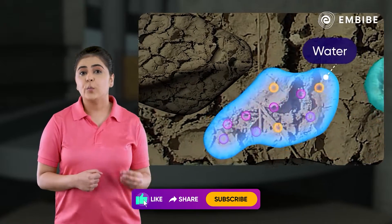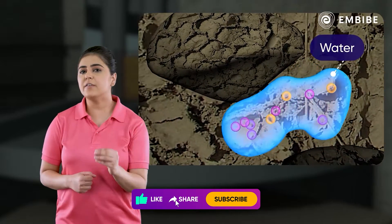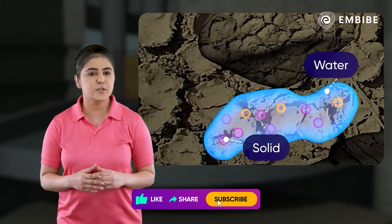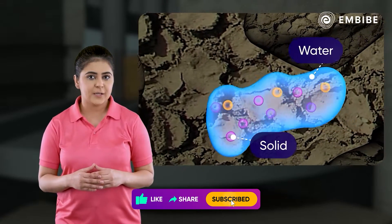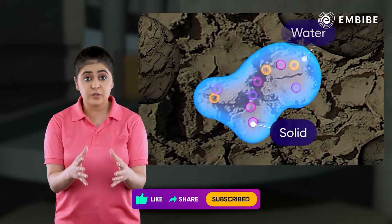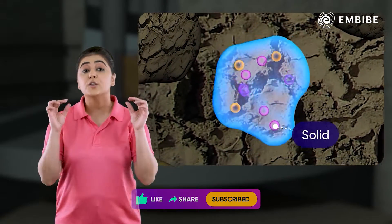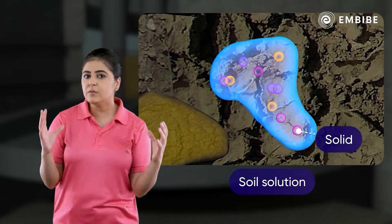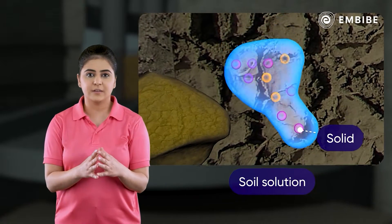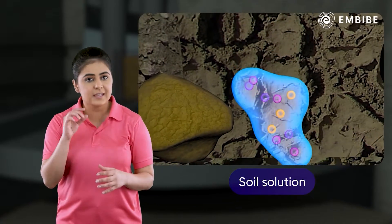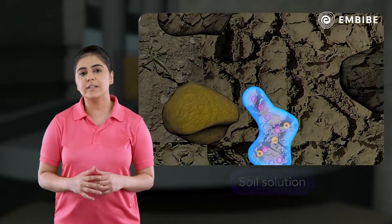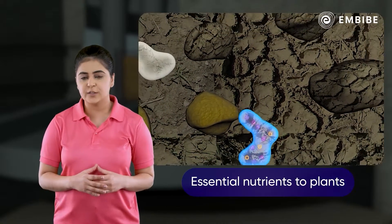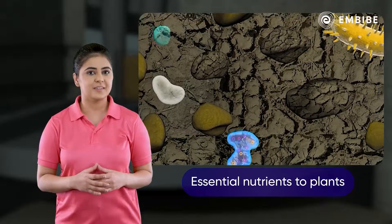The pores in the soil contain a dilute solution of water which has various solids dissolved in it. This solution, called soil solution, surrounds the soil particles and is the source of essential nutrients to the plant.